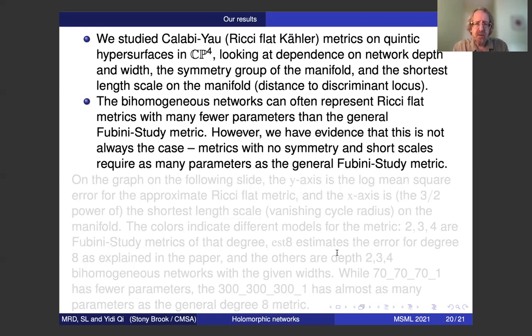We studied the quintic manifolds and the Ricci flat metrics in some depth, and looked at not just the dependence on hyperparameters, but the symmetry group of the manifold, the shortest length scale of the manifolds. We don't just look at Fermat, we look at a wide variety of defining equations. The result of most interest for this audience is probably to consider this as a special case of the question, when you numerically solve a PDE, is it the case that a neural network approximation can represent the solution using fewer parameters? We have very detailed results which show that, yes, sometimes that's the case, if the metric has symmetry and does not have short scales, but if you conversely have no symmetry and short distance scales, you can require as many parameters as the general Fubini-Study metric. The network does not seem to save parameters.